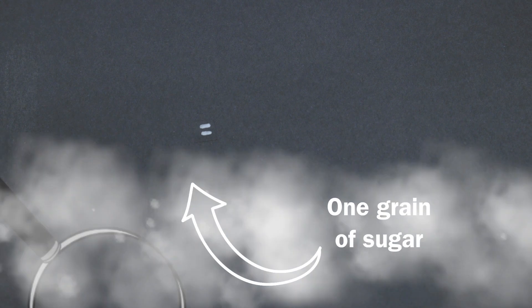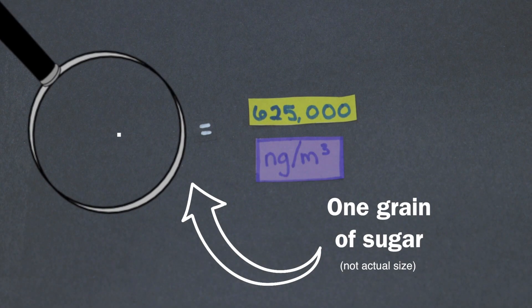This is sugar. One single grain of sugar is approximately 625,000 nanograms.